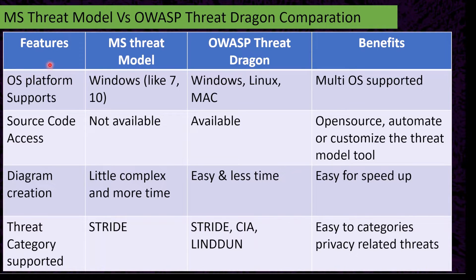Here you can see the features comparison of MS Threat Model and OWASP Threat Dragon. The first feature is OS platform support. The Microsoft Threat Model supports Windows — such as Windows 7, Windows 10, and other Windows OS. OWASP Threat Dragon supports Windows, Linux, and Mac — multi-OS is supported. For source code access, MS Threat Model is not available as open source.